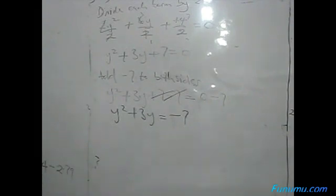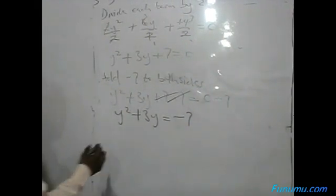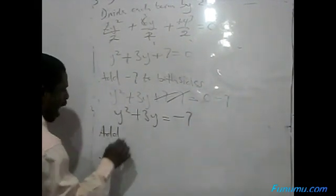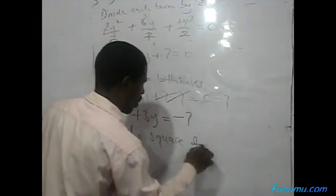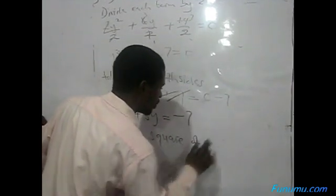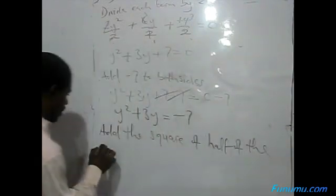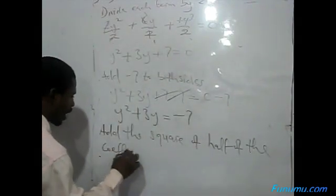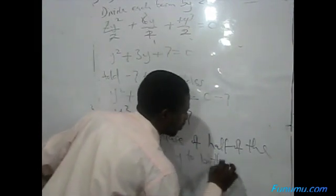From this one we move to what? You add the square of the half of the coefficient of Y to both sides.